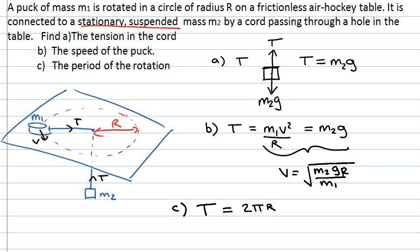v, which was the square root of m2 over m1 times gR. So all that's left is to simplify that, which leaves us with 2π times the square root of m1R over m2g.